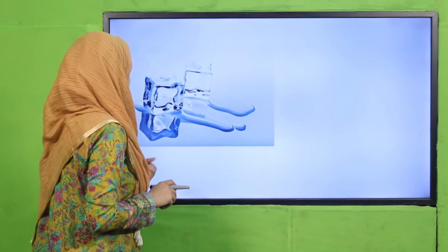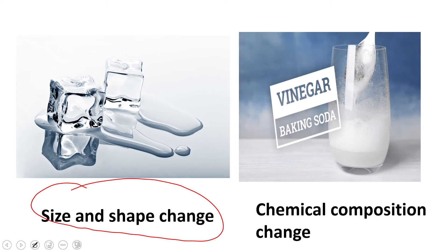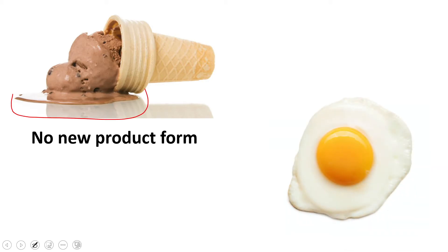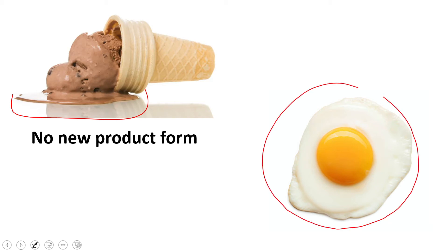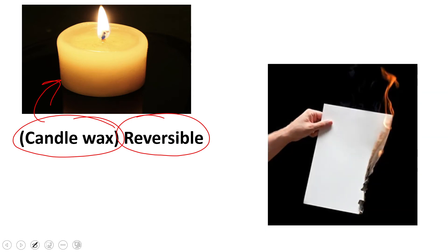Melting of ice is a physical change because only the shape and size are changed. Mixing of vinegar and baking soda is a chemical reaction because a new product — a gas — is released. Melting of ice cream: no new product, only the state changes, so that is a physical change. Cooking of an egg: when you fry an egg, a cooked form of egg is formed — that is a chemical change. Melting of candle wax is reversible, whereas burning of the candle wick is an irreversible chemical change, and burning of paper is also an irreversible chemical change.